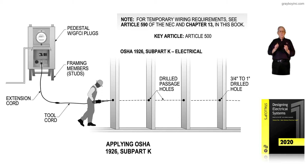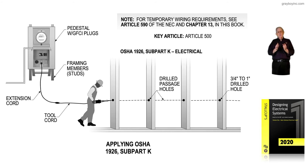Then we would look at NFPA 70B for rules, because that pertains to maintenance. However, the maintenance person needs to know the NEC as far as changing one-on-one. For example, if I was changing a switch on the wall, then 70B is going to recommend the use of Article 404 for switches.